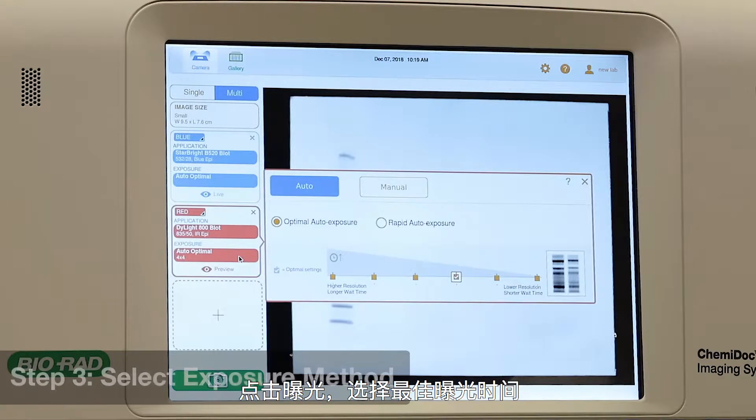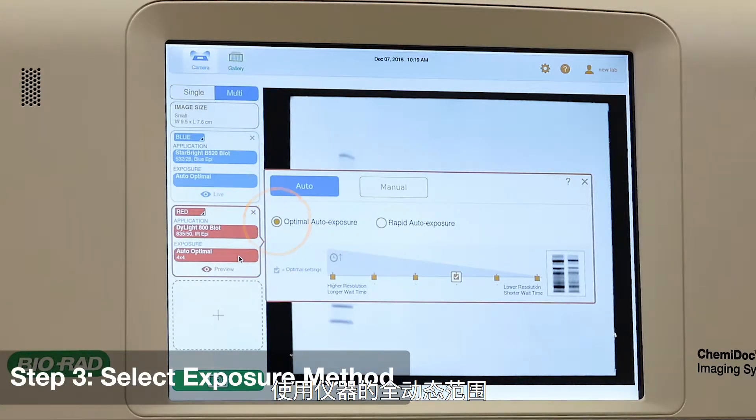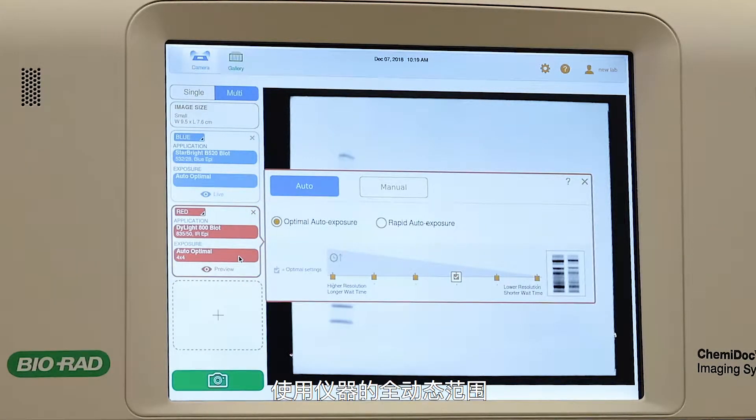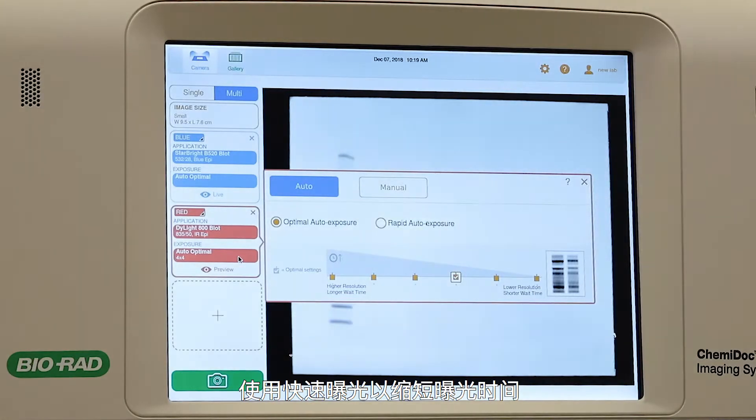You can choose between entering your exposure time or enabling automatic detection of your bands. Tap Exposure. Select Optimal Exposure to use the full dynamic range of the instrument to show faint bands without saturating bright bands. Use Rapid Exposure for shorter exposure times.